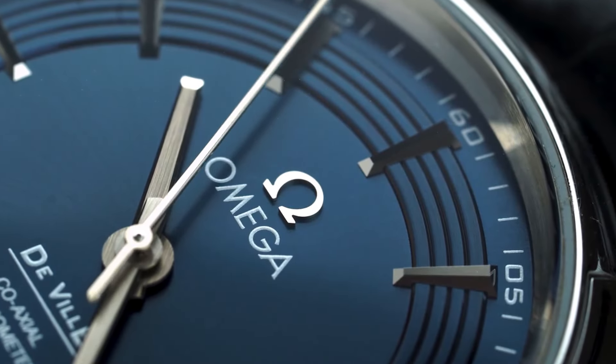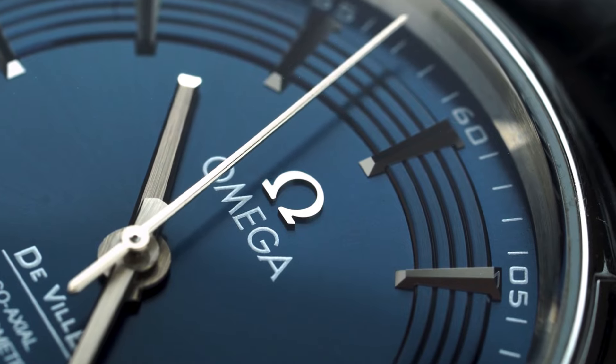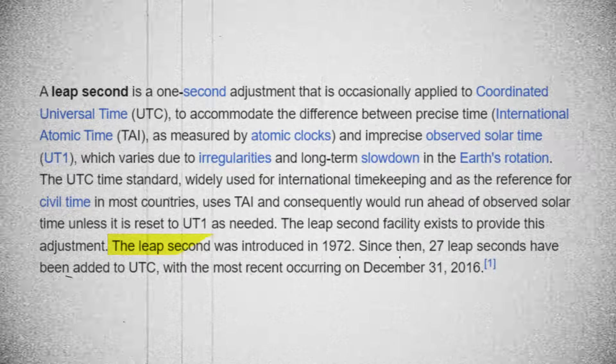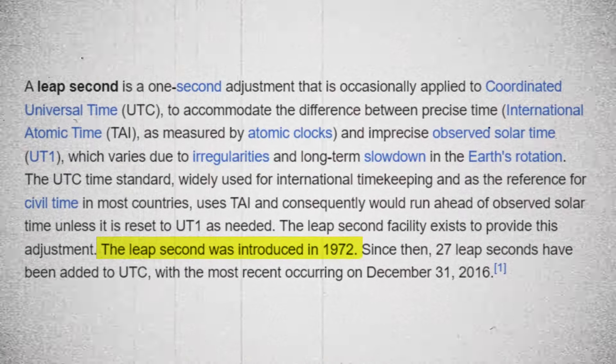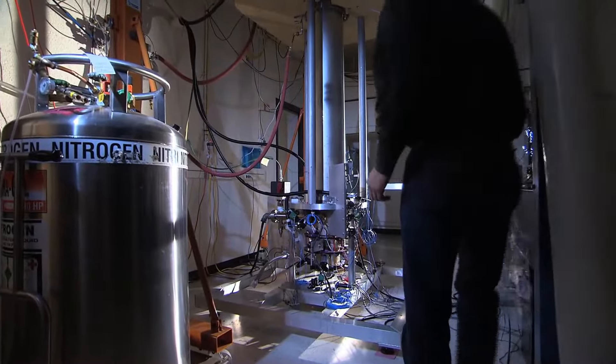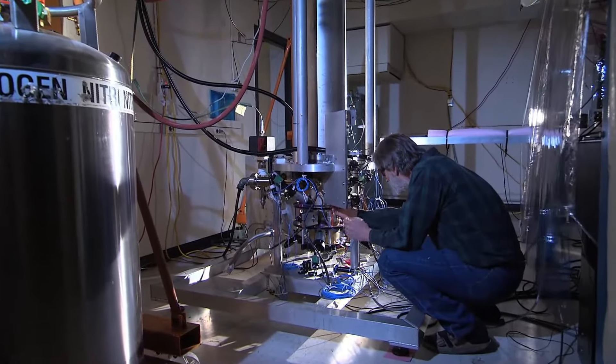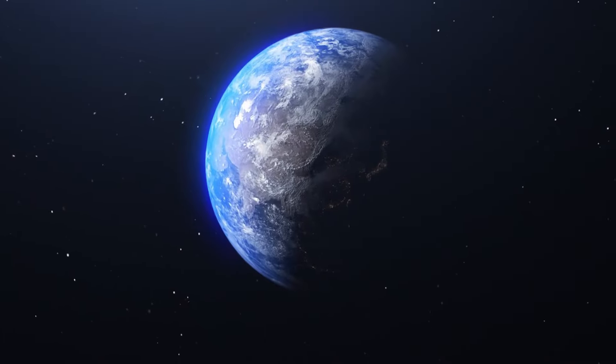The concept of a leap second was introduced in the early 1970s when atomic clocks became the standard for international timekeeping. These clocks are incredibly precise, but they don't account for the Earth's variable rotation.